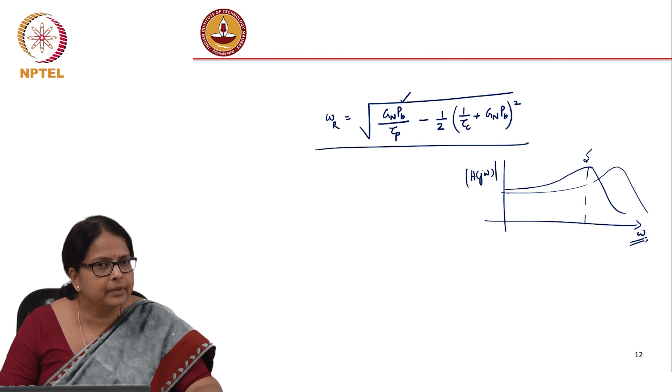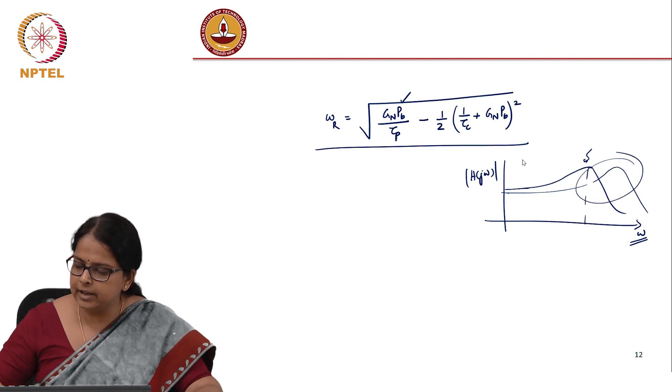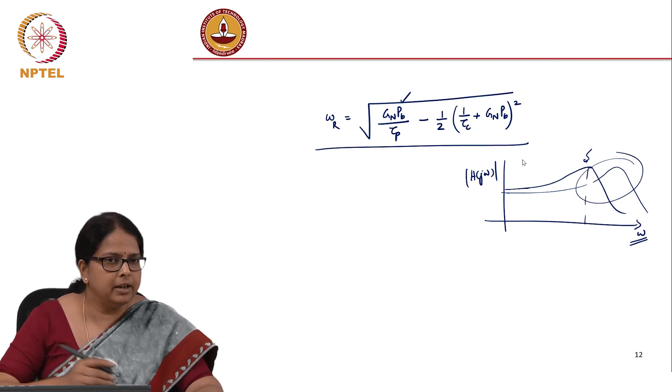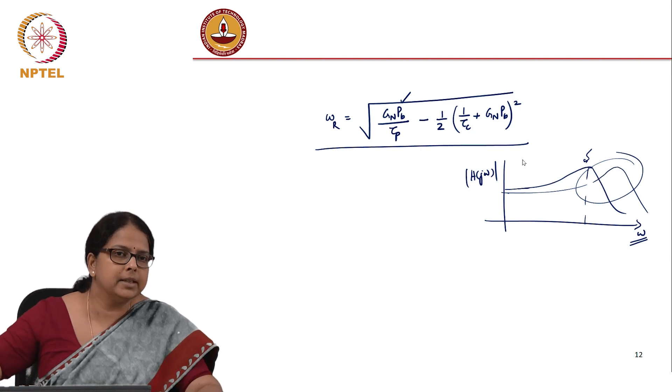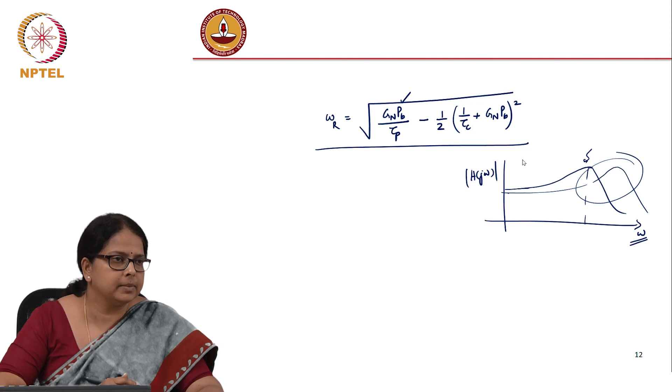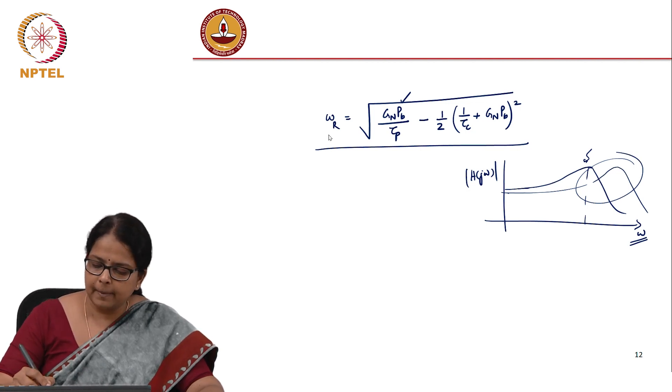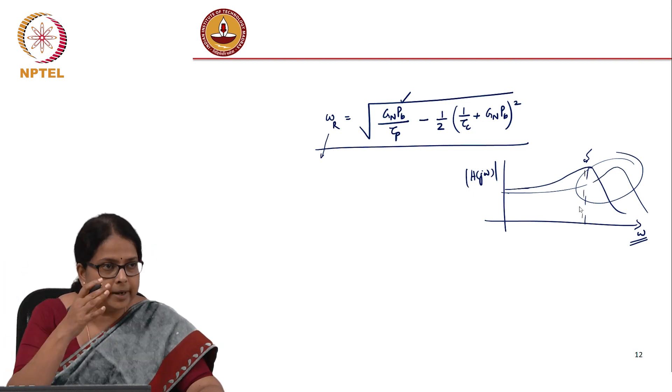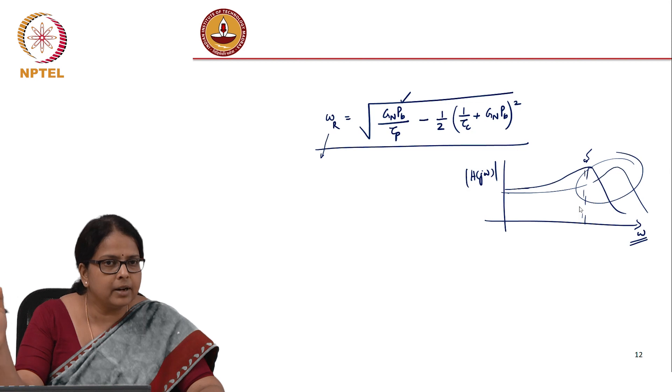In practical systems, we do not want to operate anywhere near resonance. Why? You do not want to operate near resonance because it is a non-linear response. If I excite my system at that frequency, I will get multiple frequencies, harmonics, difference frequencies at the output.